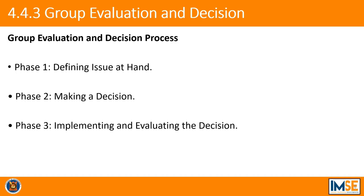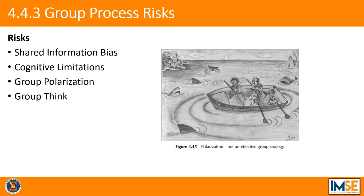There are several risks for the group process. Shared information bias is a tendency for groups to discuss issues familiar to all members and avoid examining information that only a few members know, leading to poor decision-making. Poor communication skills and biases in individuals' cognition and motivation can lead to judgment errors. Group polarization, identified in social comparison theory, is the tendency to respond in a more extreme way when making a choice as part of a group, causing difficulty assessing facts rationally. Groupthink is a psychological phenomenon where the desire for harmony or conformity results in an irrational or dysfunctional decision-making outcome.